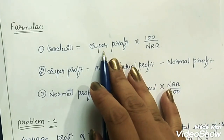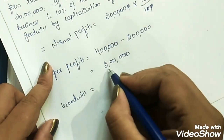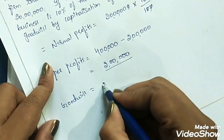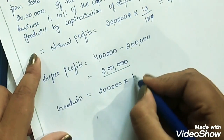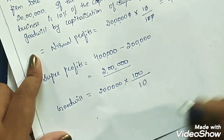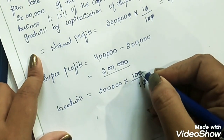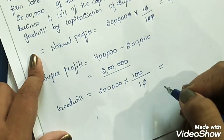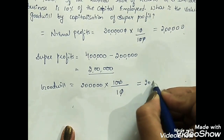Finally, we find the goodwill. Goodwill = Super Profit × 100 ÷ NRR. Super profit is ₹2 lakhs and NRR is 10%. So: 2 lakhs × 100 ÷ 10 = ₹20 lakhs. The value of goodwill is ₹20 lakhs.